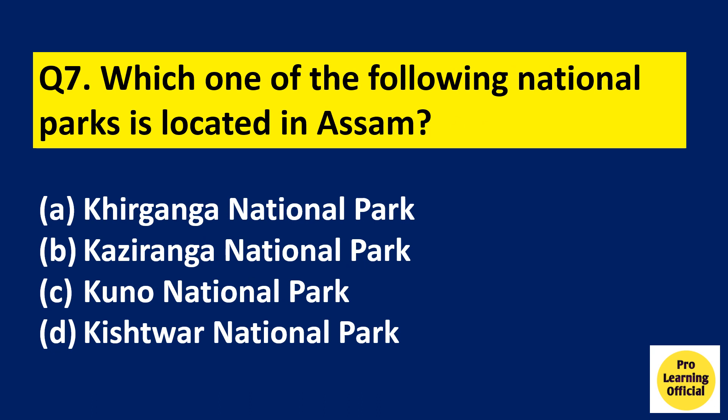Question 7: Which of the following national parks is located in Assam? Option A: Kheriganga National Park. Option B: Kaziranga National Park. Option C: Kuno National Park. Option D: Kishtwar National Park. The right answer is Option B, Kaziranga National Park.